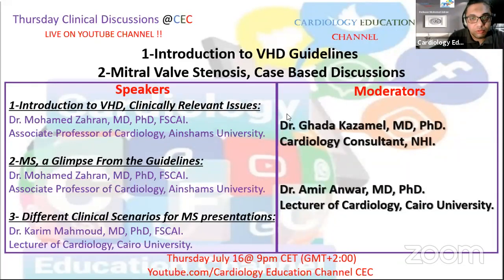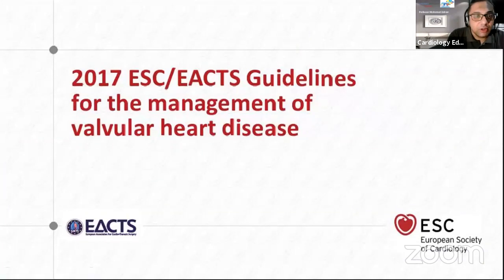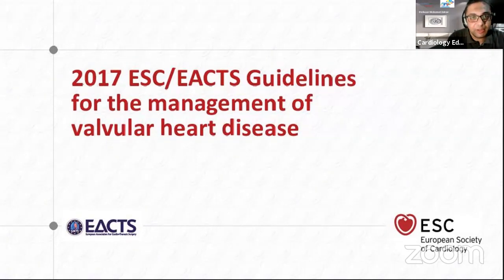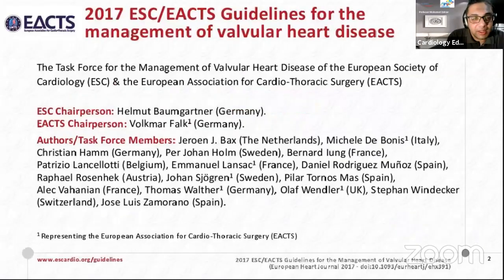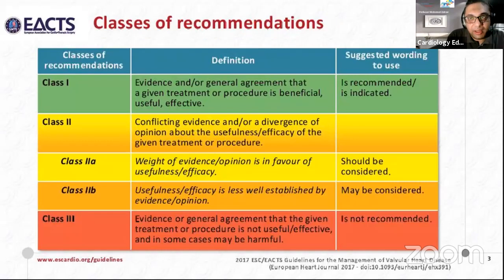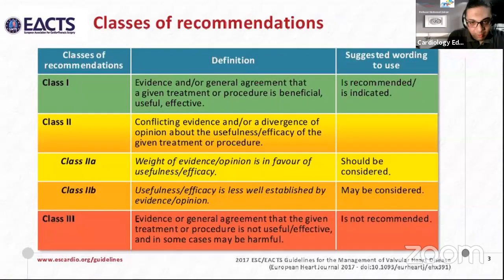The first part of the lecture is derived from the most recent update of the 2017 guidelines for the management of valvular heart disease. Class one recommendations shown in green means it is recommended and indicated to be followed. Class two means there is some conflicting evidence. Class 2a shows that the weight of evidence is in favor of usefulness and efficacy, while class 2b means it is less well established.